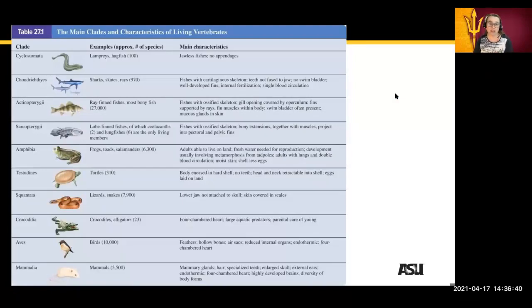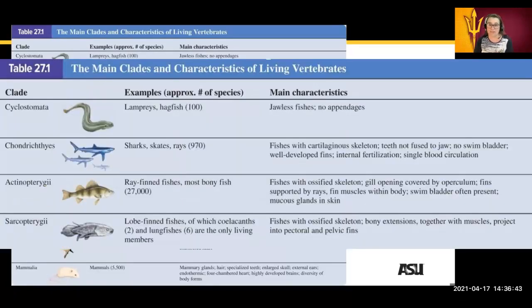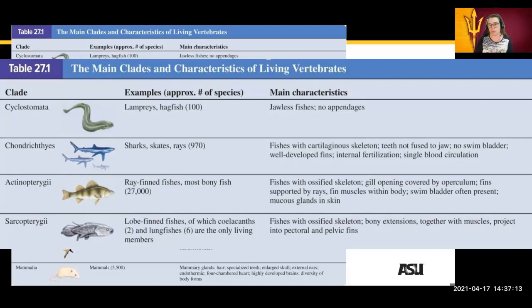The main characteristics of the Cyclostomata are the jawless fish — they don't have appendages. The Chondrichthyes, which are the sharks, skates, and rays, are similar to fish but they don't have a swim bladder and they have single blood circulation. They internally fertilize, but their skeletons are cartilaginous. The Actinopterygii are fish that have an ossified skeleton and normally do have a swim bladder. Over time, these innovations continue to create a more complex body plan in the organisms.